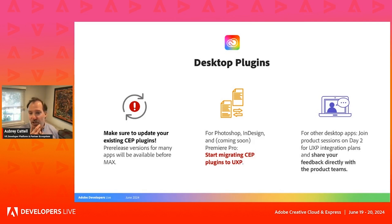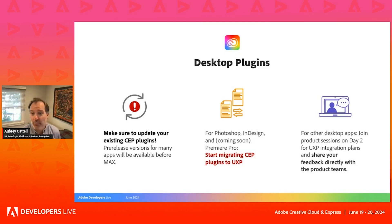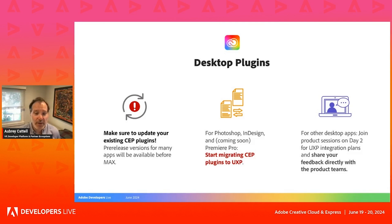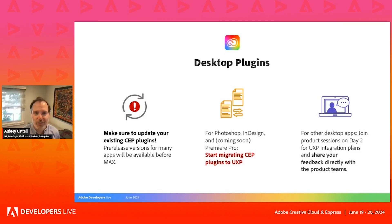Day two is where you'll learn about our desktop product updates and have a chance to talk about your needs as we continue the transition to UXP across more of our desktop applications. Three key takeaways around desktop plugins: first, make sure to update your existing CEP plugins — pre-release versions for many apps will be available even before MAX. Second, if you're already building for Photoshop, InDesign, and Premiere Pro — which is now in private beta for UXP — you can start migrating CEP plugins to UXP. For other desktop apps, check out the product sessions on day two to learn more about their UXP integration plans.